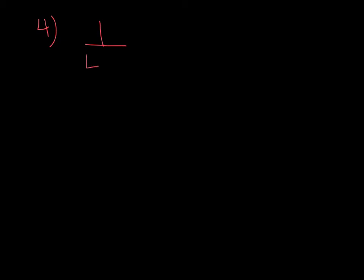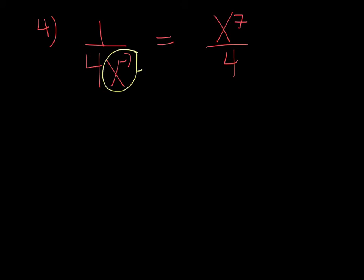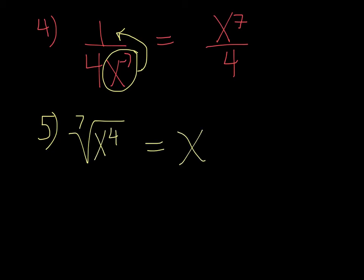Number 4: 1 over 4x to the negative 7 is the same as x to the positive 7 over 4. The negative 7 means you can bring it up to the top and make it positive. The 4 doesn't have the exponent, so it stays down on the bottom. Number 5: the 7th root of x to the 4th is written as x to the 4 sevenths — the exponent is on the top and the root is on the bottom.